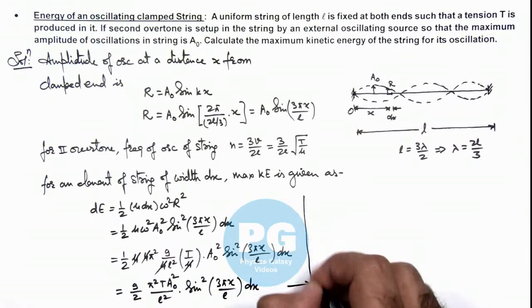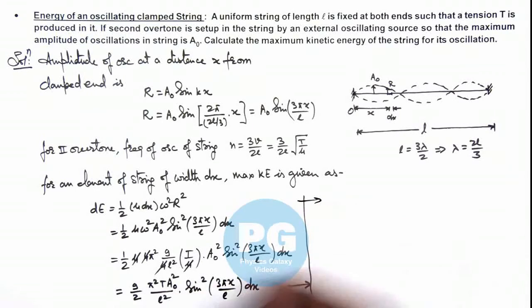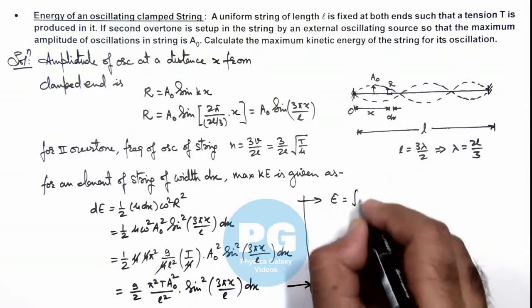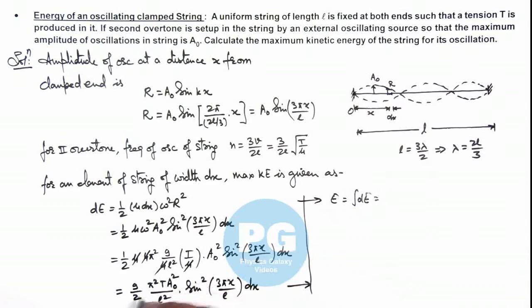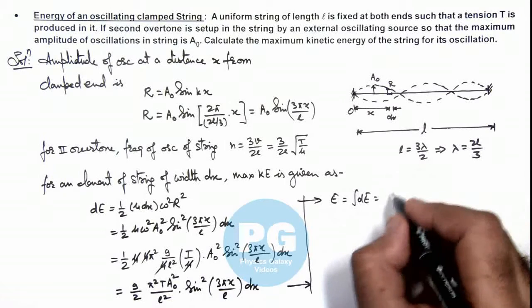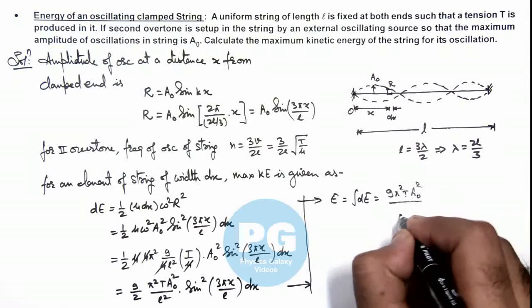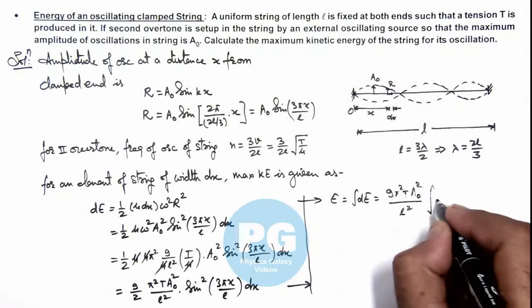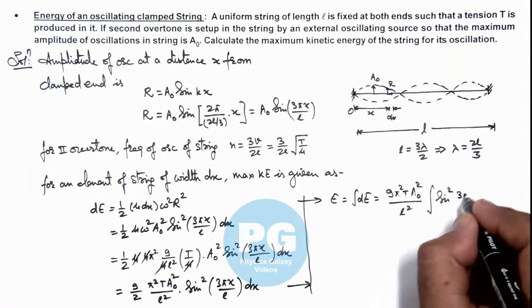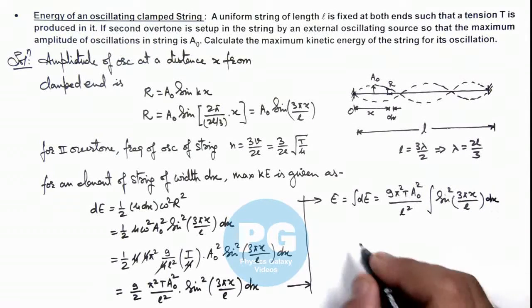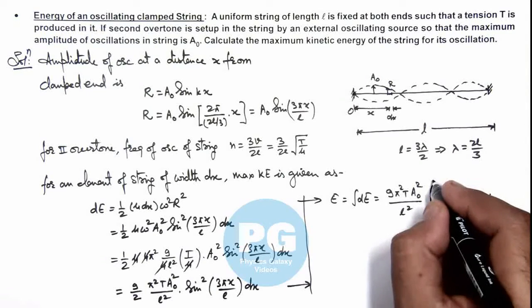Now if we continue from here, then total energy, the maximum kinetic energy we can write as the maximum kinetic energy of string we can write as integration of dE. And the constant terms can be taken as it is 9π²T A₀²/(2l²) integration of sin²(3πx/l) dx and we integrate it from zero to l.